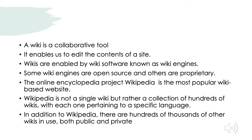Wikis are powered by software known as wiki engines. Some of these wiki engines are open source and some are proprietary. The best example of content developed using wiki software would be the Wikipedia Encyclopedia — the most popular wiki-based website, which has a provision for additional information from users. You must have seen the pen icon on Wikipedia pages, which enables you to add content. Of course, it does not immediately get displayed; it will be analyzed by a team of experts, and only if it is acceptable will it be added to that particular site.